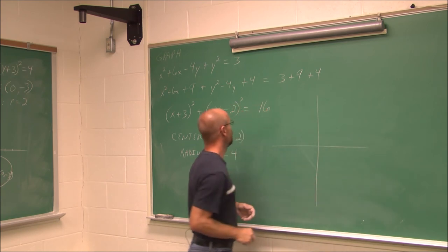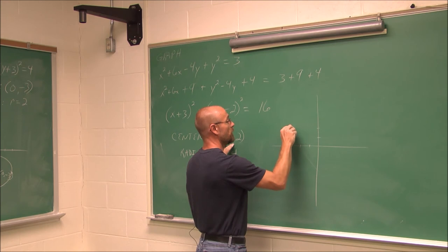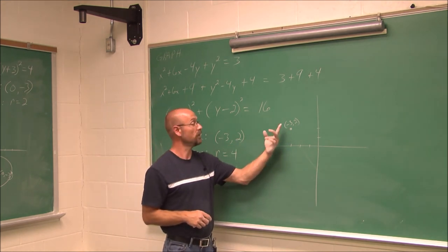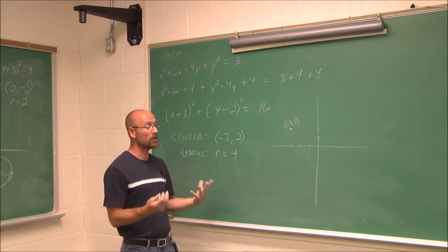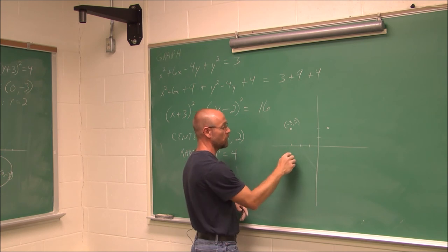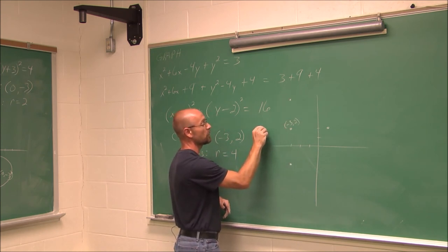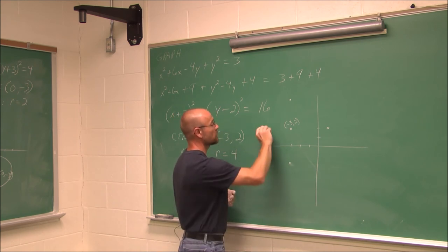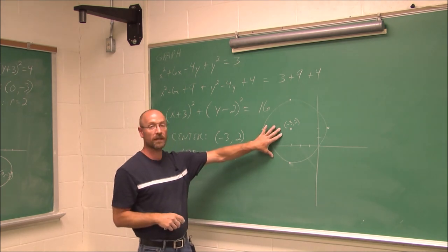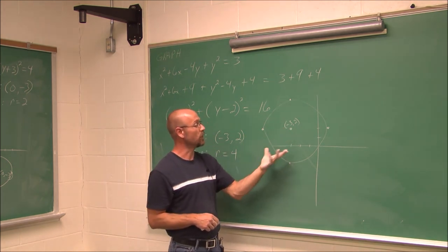Now I'm ready to graph this circle. I'll go to the point (negative 3, 2) and label it as center (h, k). From this center, I need to go 4 in all directions to make the circle: 4 to the right, 4 down, 4 up, and 4 to the left. Once we find the center and know the radius, we can go in all directions that radius distance from the center and graph a circle.